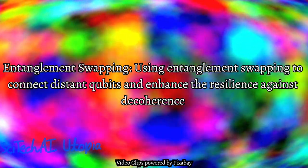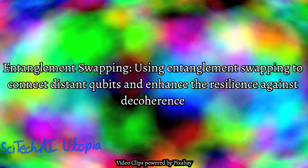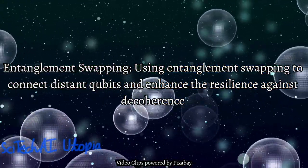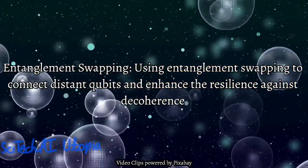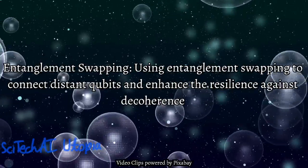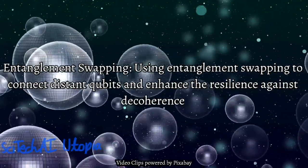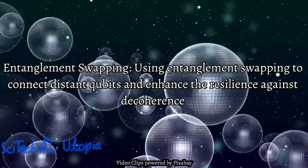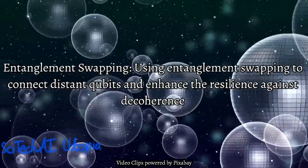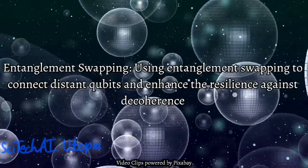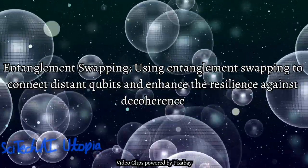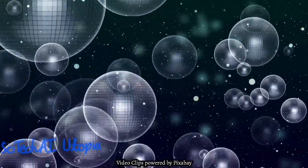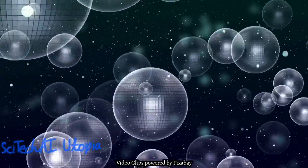Solution 20: Entanglement Swapping. Entanglement swapping involves connecting distant qubits by creating entanglement between intermediate qubits. This technique helps overcome the limitations of direct entanglement between distant qubits, reducing the impact of decoherence over extended quantum networks. It plays a crucial role in the development of scalable and distributed quantum systems.